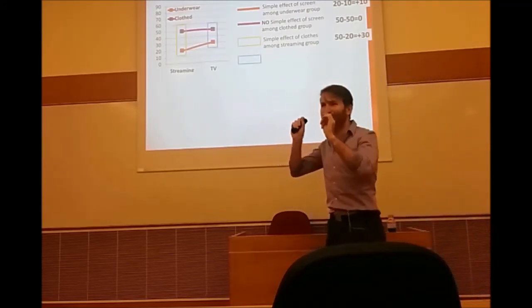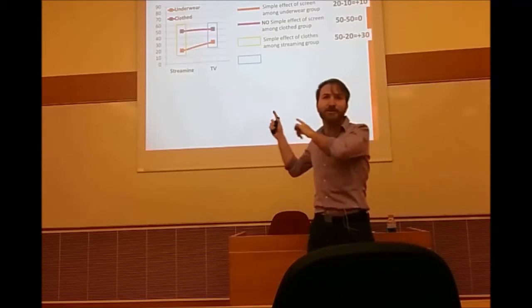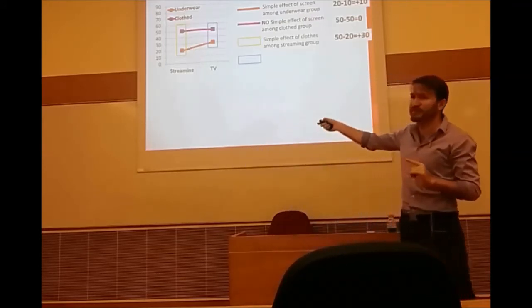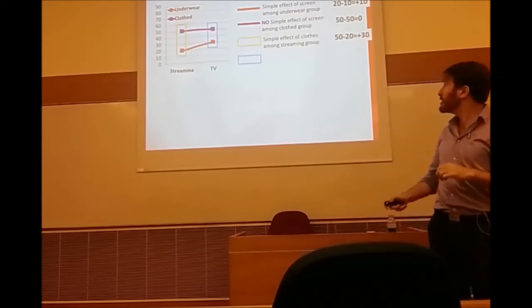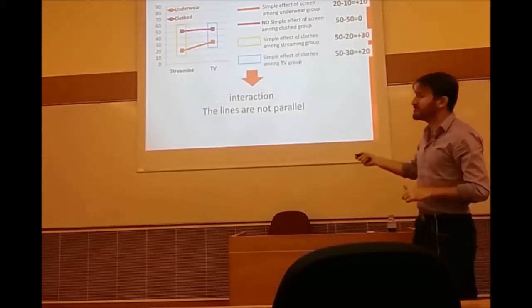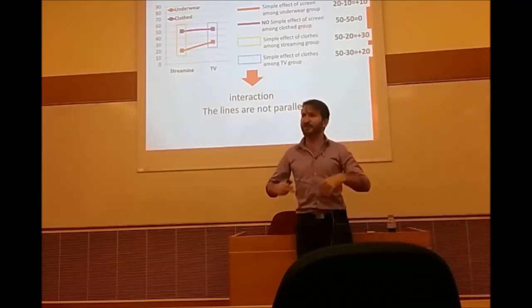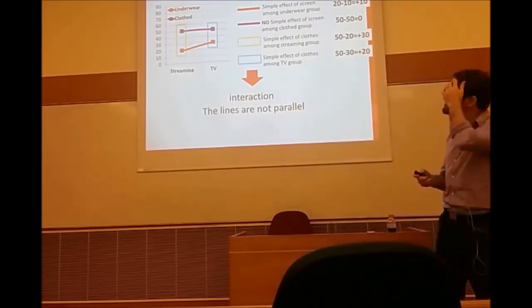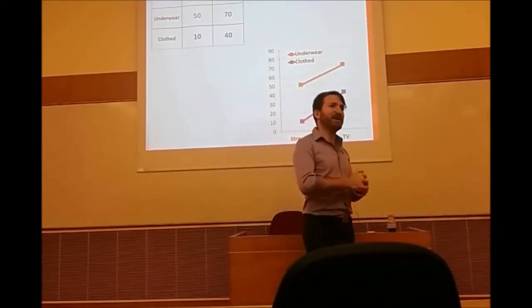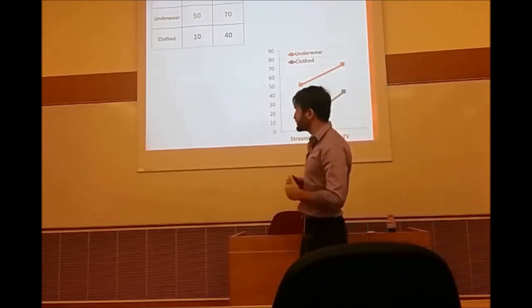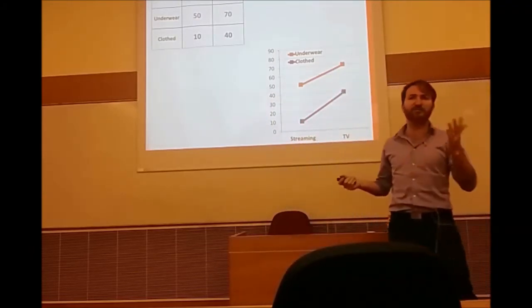This means we have an interaction. Now let's talk about what's called an ordinal interaction. First, is there an interaction here? Yes — the lines are not parallel. Let's analyze the simple effects of screen type: TV versus streaming in both groups.